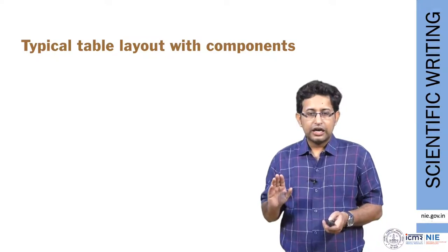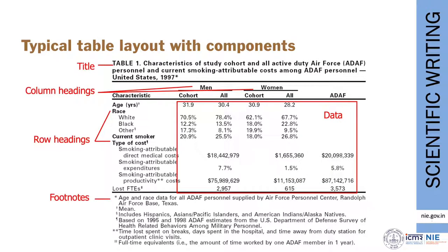A typical table layout has some characteristic features. First, what we have is a table number and the title of the table. Following that there is a body of the table, and at last we have footnotes and columns. In the body of the table you will see rows with row headings and columns with column headings. You start with a title and table number, give the column and row headings, then put the data along the rows and columns with specific units or other signages, and finally the footnotes to make the table standalone and clear.